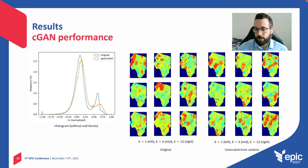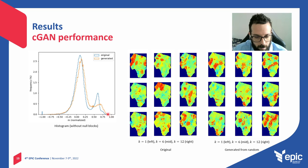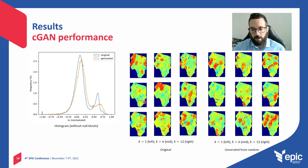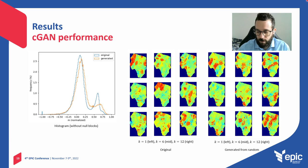Now, our results. First, the performance of the conditional GAN. Here we can compare the histograms of the original ensemble and the ensemble generated by the network. We can see a quality of similarity — this can be improved, but for now it seems good because the network can capture the super-K features. For three different layers, we can see some realizations from the original ensemble and from the generated ensemble, and we can observe the super-K for all layers and similar realizations — for example, these two that do not have this kind of values.